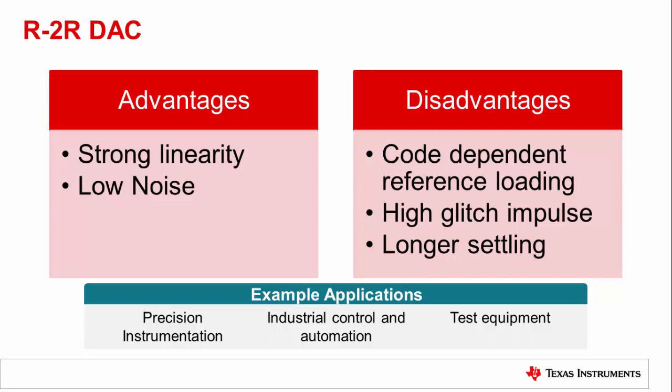One disadvantage to the R2R DAC is the code-dependent loading on the reference. For cases where the DAC will be updated with great frequency, a buffer for the reference input is necessary to improve reference settling time. The strongest disadvantage for the R2R DAC is the heightened glitch energy created as a result of the high number of moving switches and make-before-break connection scheme. The switches moving between VREF and ground versus different voltage potentials in the string DAC leads to longer settling time for the R2R DAC. Internal design forces the output buffer to have a wide common-mode range, which will tend to make the device more expensive and provide some degradations to linearity.